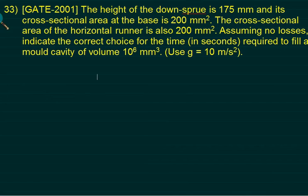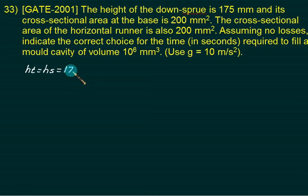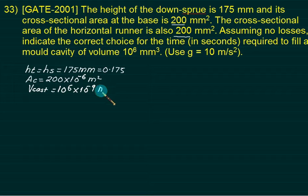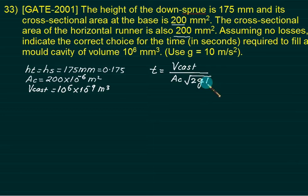Next example: height of down sprue = 175 mm, cross section area at base = 200 mm², cross section area of horizontal runway = 200 mm² (minimum area = choke area = 200 mm²). Volume of casting = 10⁶ mm³ = 10⁻³ m³. Using T = Vm / (AC × √(2g × HT)), substitute the values. The answer should come close to 2.67 seconds.